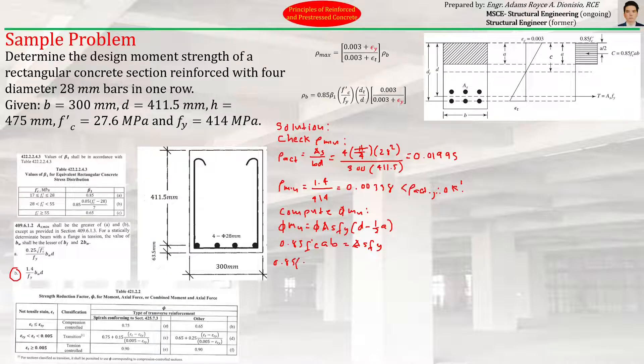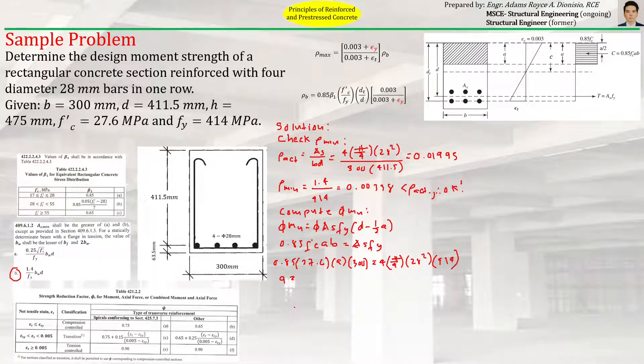Substituting: 0.85 f'c (27.6) times a (unknown) times b (300) equals As = 4π/4 × 28² × 414. We can compute a readily. So a equals 4π/4 × 28² × 414 divided by 0.85 f'c b. The value of a is 144.88 mm.